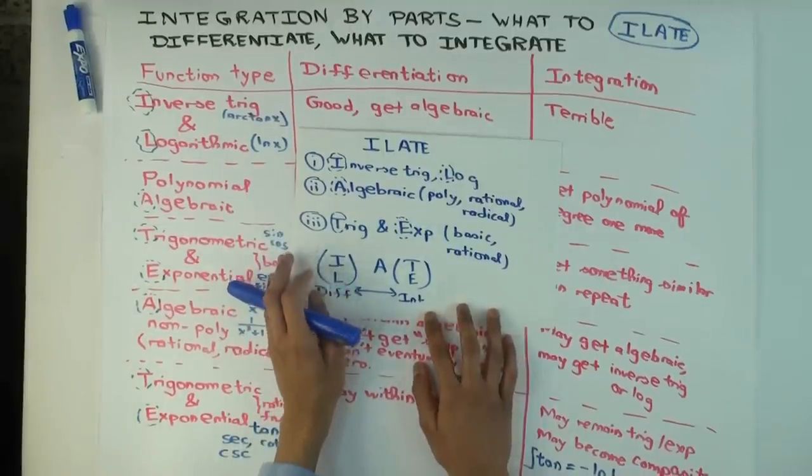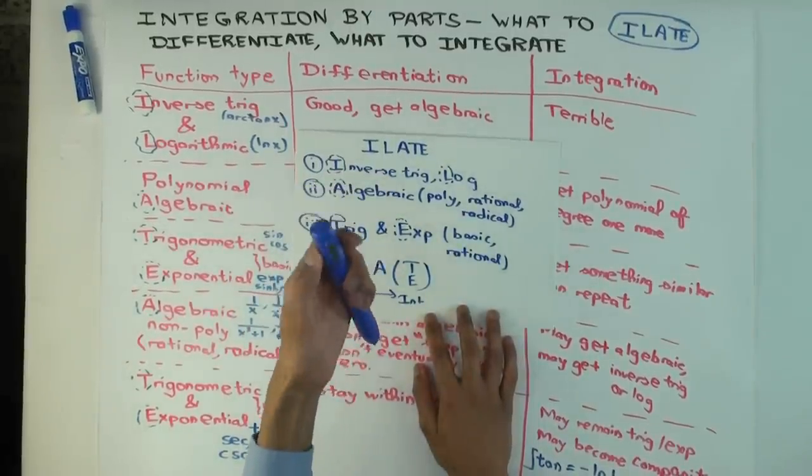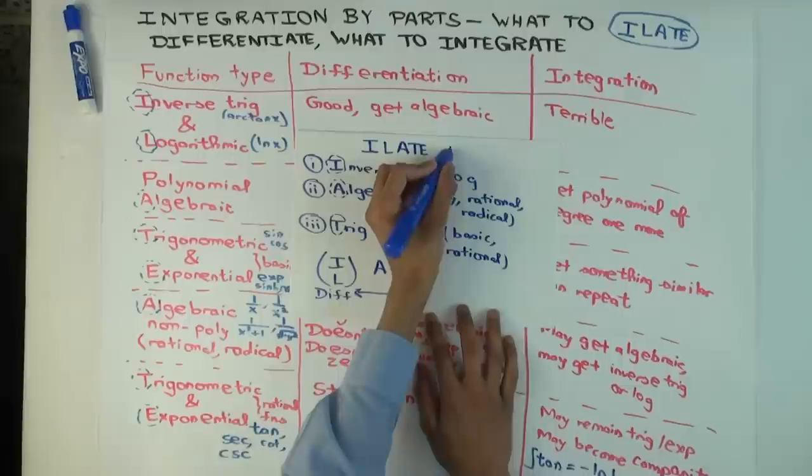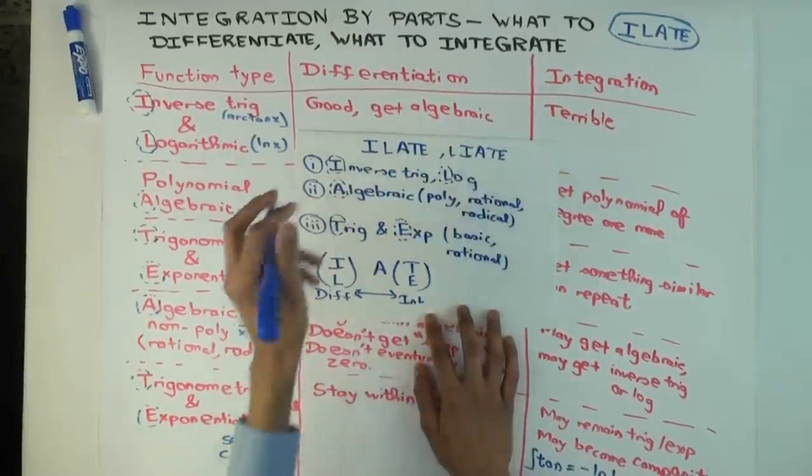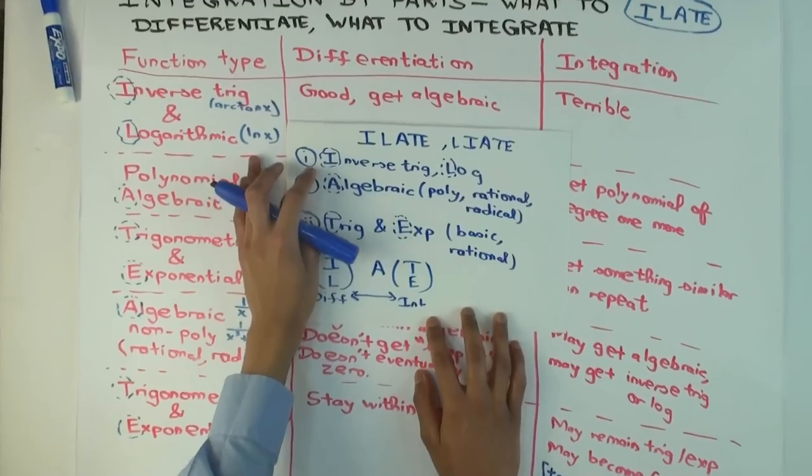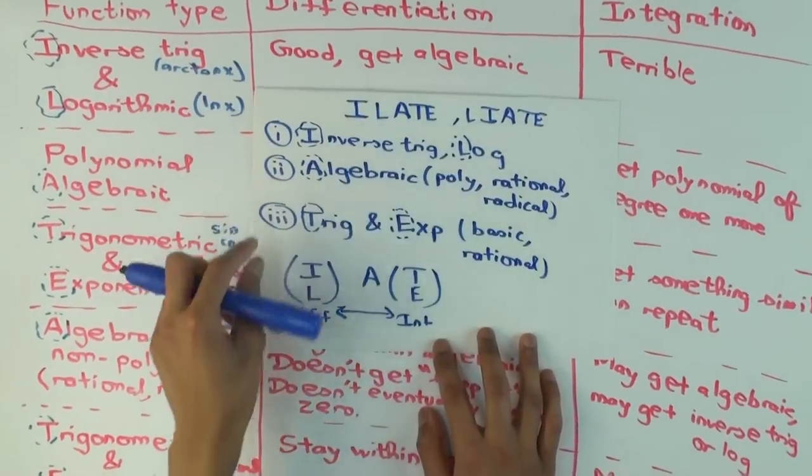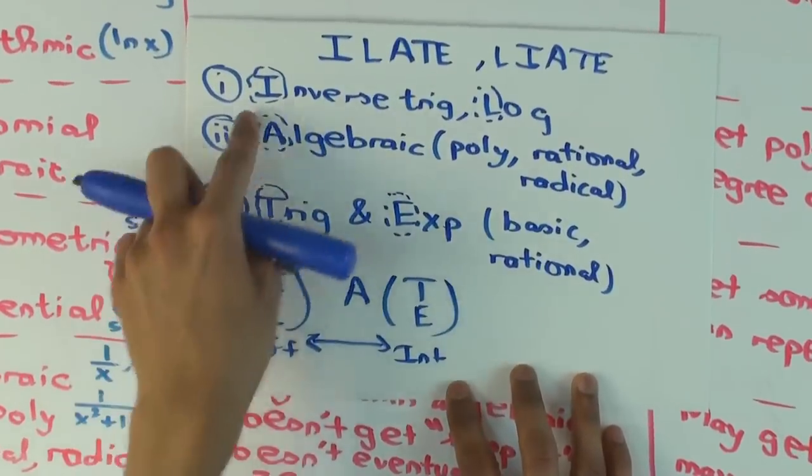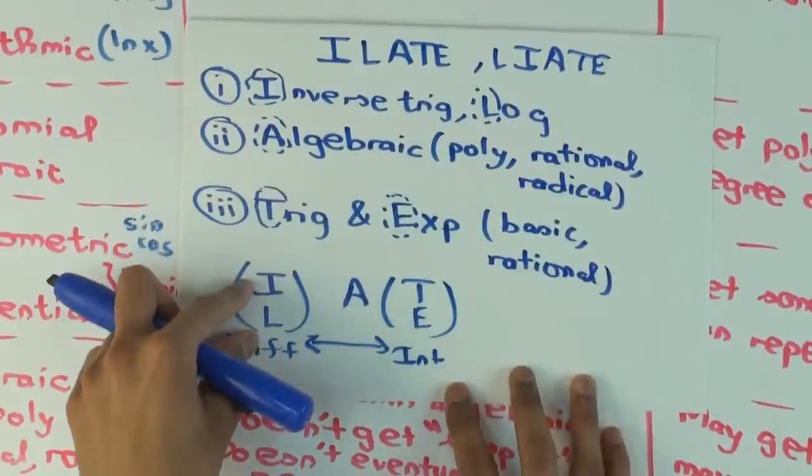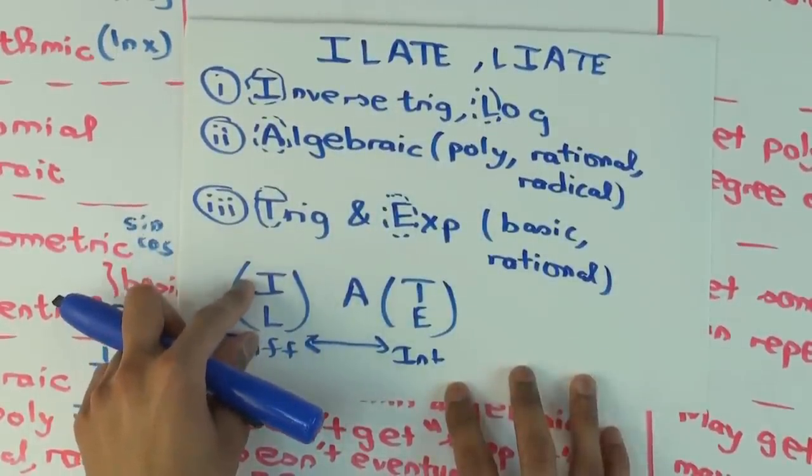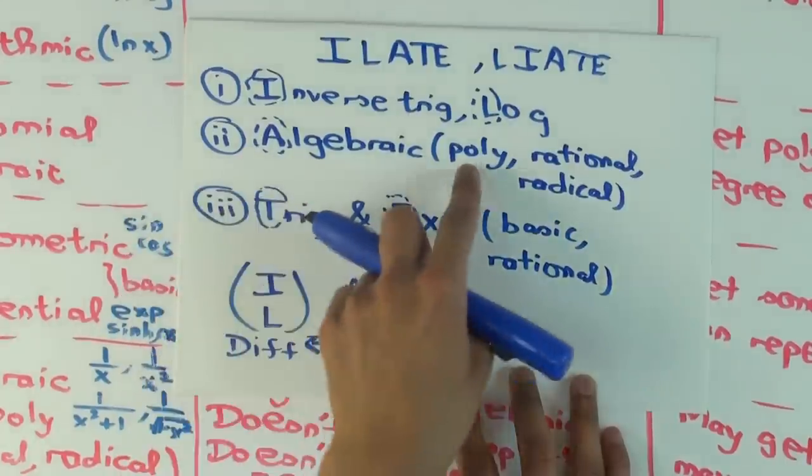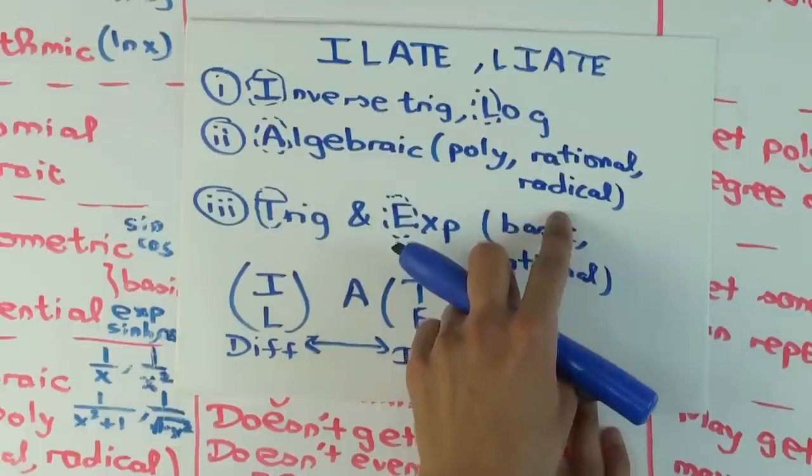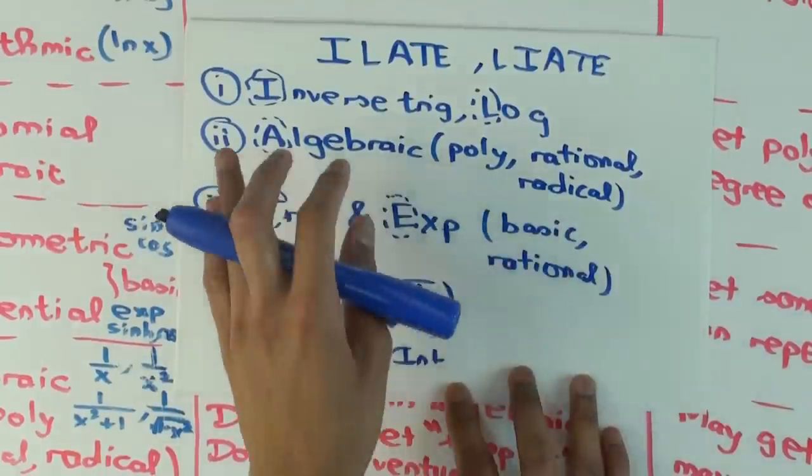The precedence rule, the general precedence rule is sometimes called I-L-A-T-E, sometimes it's also called L-I-A-T-E. You may have seen it in that form, but they're actually the same rule. It says that inverse trig and logarithmic functions, which are I and L, are the ones you really prefer to differentiate. Algebraic functions, which is the A, which includes polynomial functions, rational functions, and radical expressions are in between.